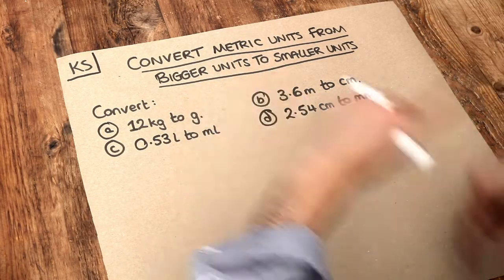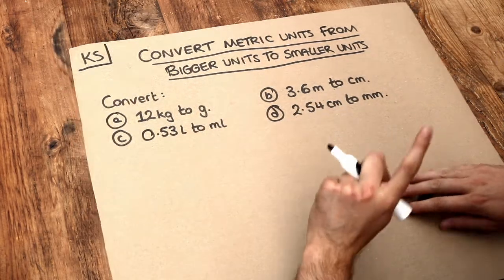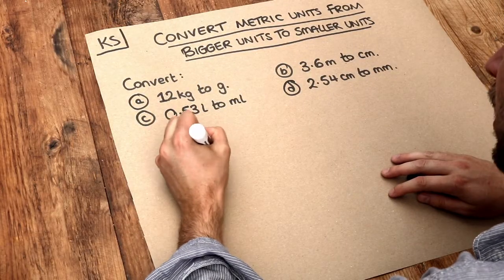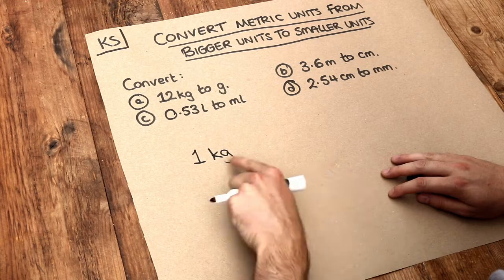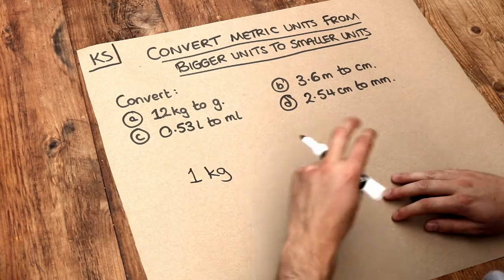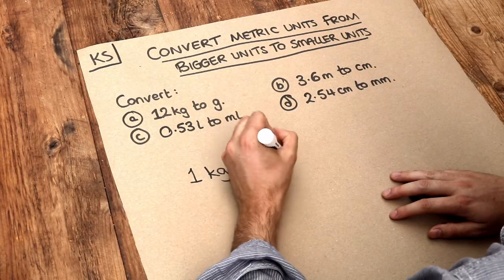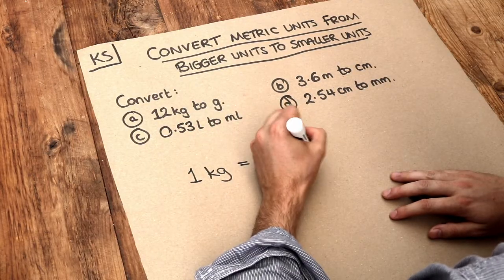And often we need to convert between these different units. So you need to remember these different conversions here, that if you have one kilogram, so that's a unit of mass, sometimes incorrectly described as a unit for weight, and one kilogram is a thousand grams.